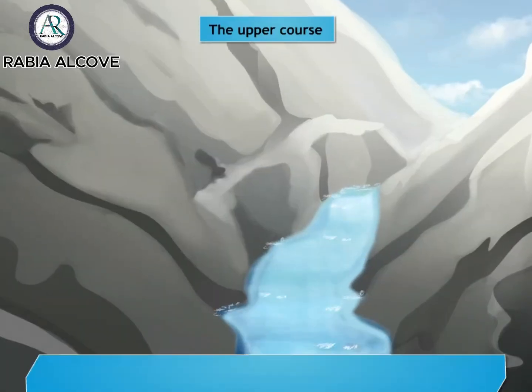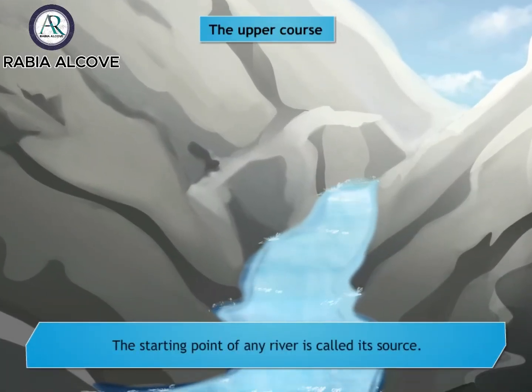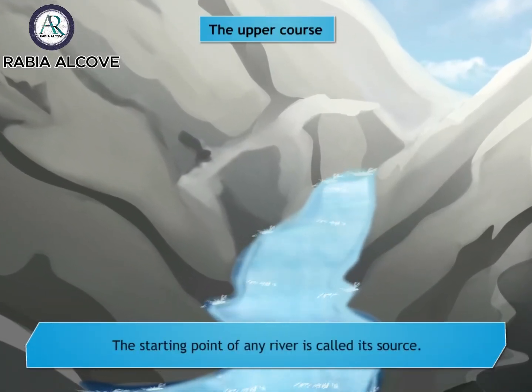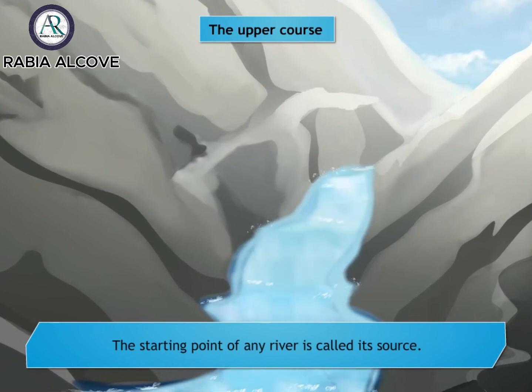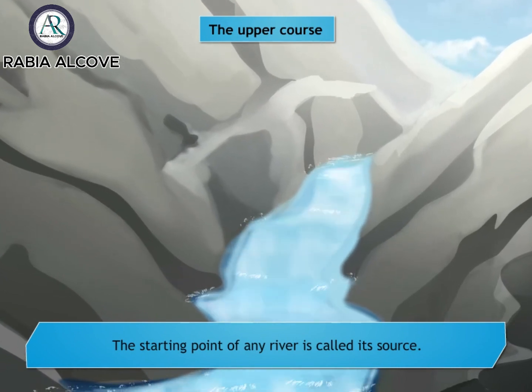The entire course of a river can be divided into three parts: upper course, middle course, and the lower course.